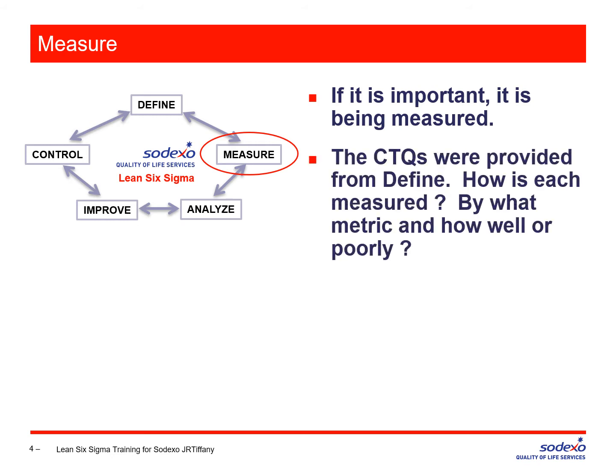We collect data on what we call CTQs — things that are critical to quality. In the define step, we named a problem, and we should have named at least one thing that is critical to quality: turnover rate, temperature, the time it takes to do something. For each CTQ listed in the define step, we can choose to keep it or throw it out.